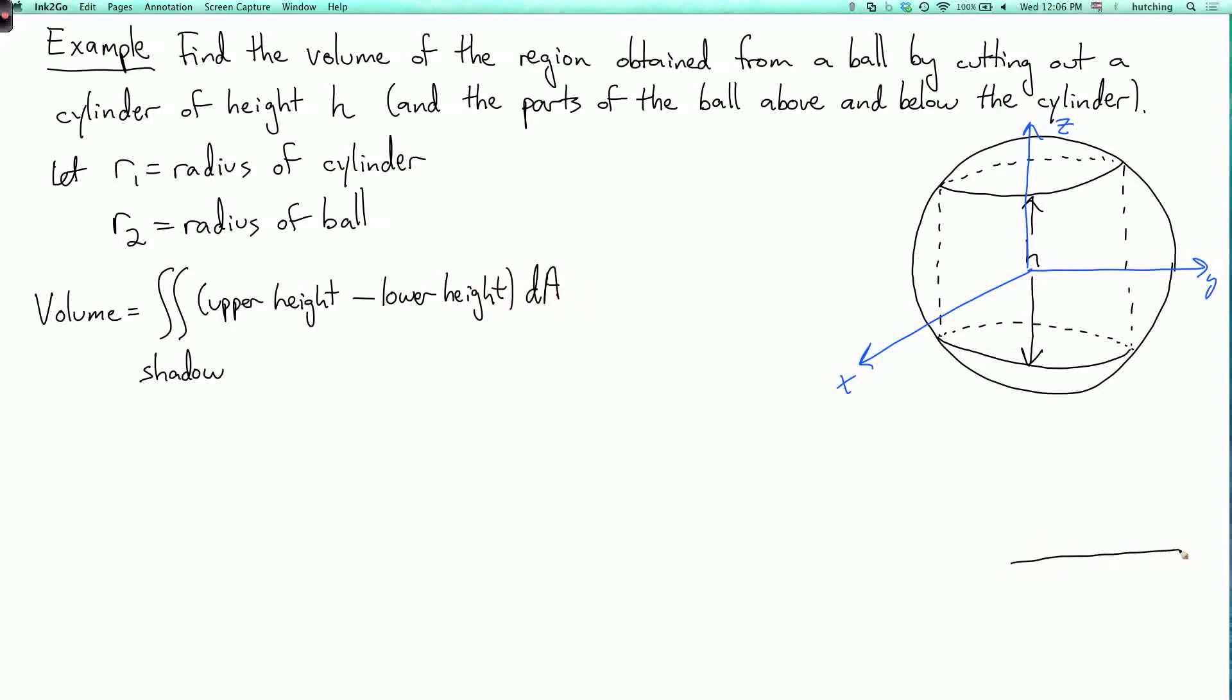Now, the shadow of this region is an annulus, so it's in between two circles: the circle of radius r1 and the circle of radius r2. The shadow of the whole ball is the disk of radius r2, and then we've cut out everything that's over the disk of radius r1. So another way to say what this region is, is it's the part of the ball of radius r2 that is outside of the part whose shadow is the disk of radius r1. So I'll write this as r1 is less than or equal to r is less than or equal to r2.